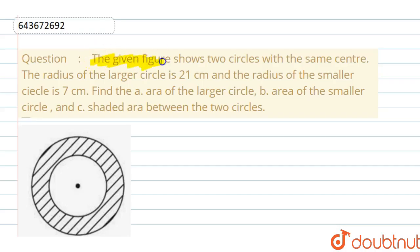The given figure shows two circles with the same center. The radius of the larger circle is 21 cm. The radius of the smaller circle is 7 cm.